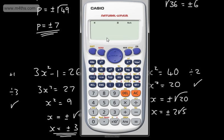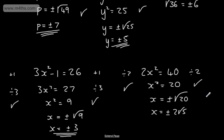On a calculator, taking the square root of 20 simplifies to 2 root 5, which gives 4.472 and so on. So to 1 decimal place, the answer is plus or minus 4.5. All it's saying is: if we multiply this number by itself, we're going to end up with 20.